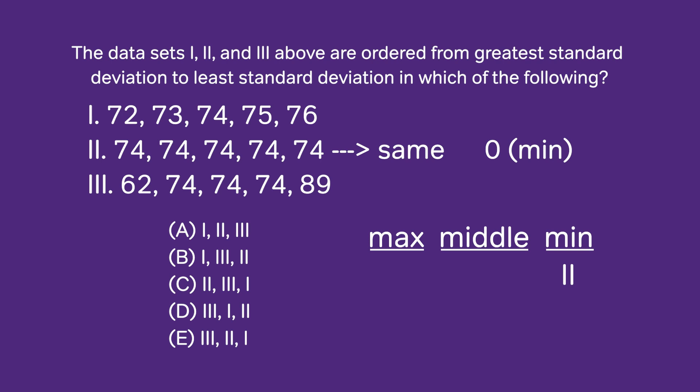Well, in set number one, the numbers do differ from each other a bit. In set number three, what we have are two huge outliers—two numbers that are significantly far away from the other numbers in the set.